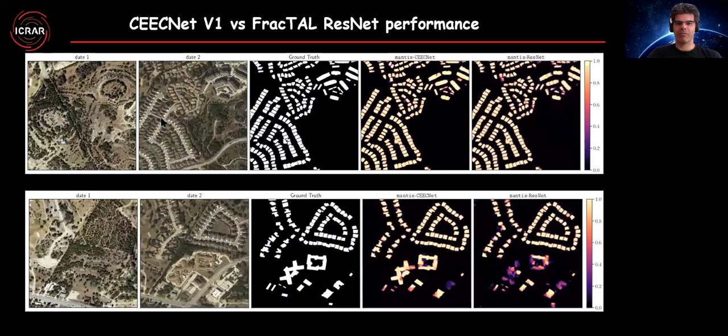Here you can see a comparison. In the first row we have the two images like date one, date two, ground truth. This is the confidence heat map from the Cygnet model. This is from the fractal ResNet model. You can see that generally Cygnet performs a little bit better than the fractal.